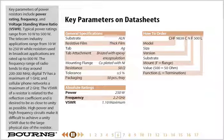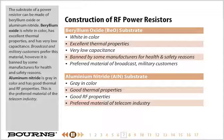The substrate of a power resistor can be made of beryllium oxide or aluminum nitride. Beryllium oxide is white in color, has excellent thermal properties, and very low capacitance. Broadcast and military customers prefer this material; however, it is banned by some manufacturers for health and safety reasons. Aluminum nitride is gray in color and has good thermal and RF properties, and is the preferred material of the telecom industry.